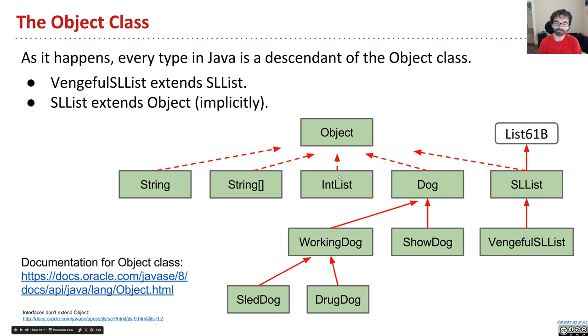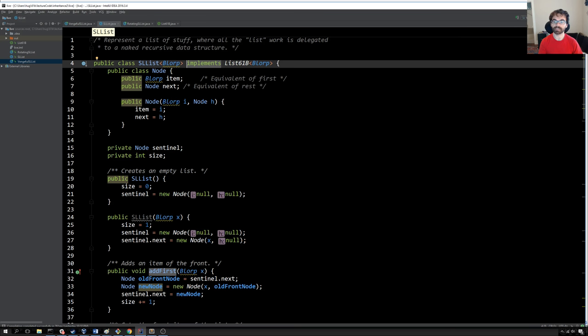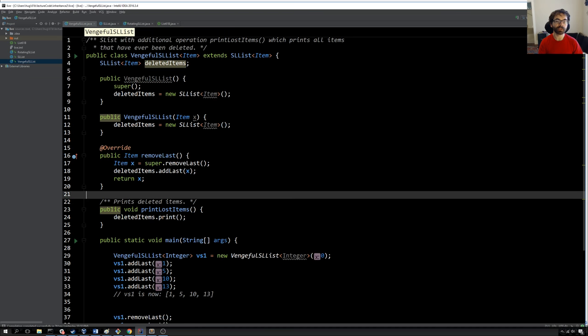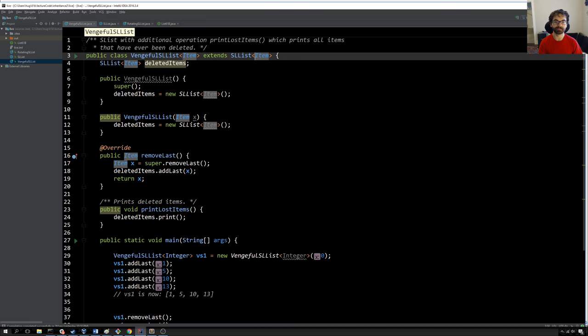Now, subtle little point. Any class where you do not say extends something else will implicitly extend the object class. So for example, let's look at the vengeful S-list class, which does not do that. Vengeful S-list extends S-list.